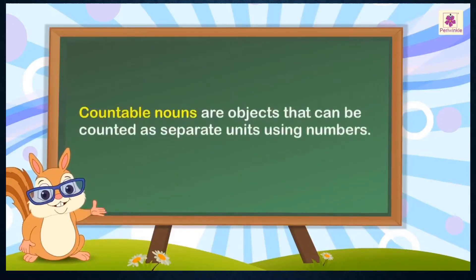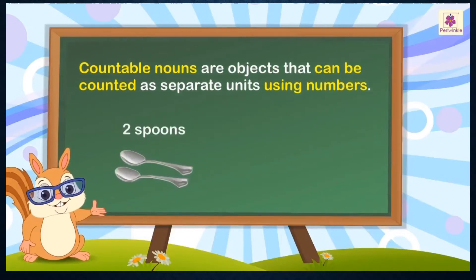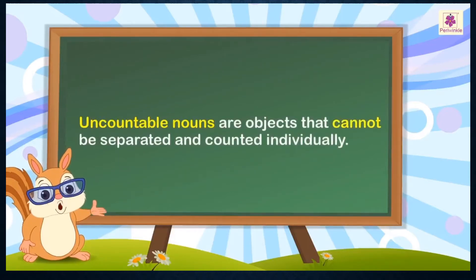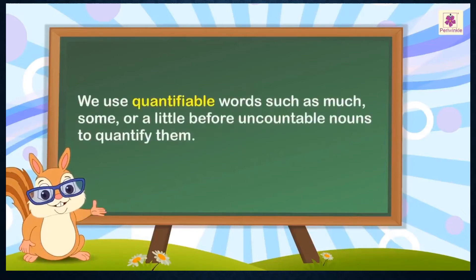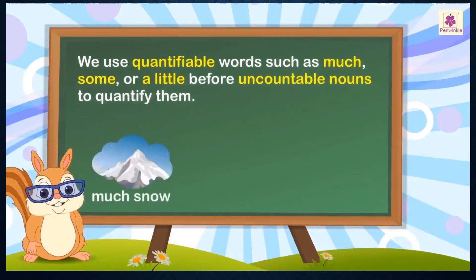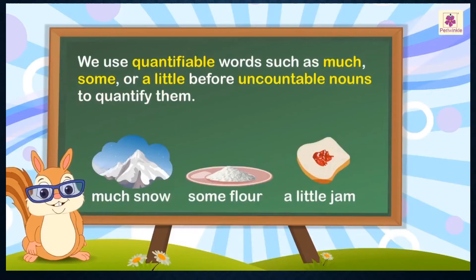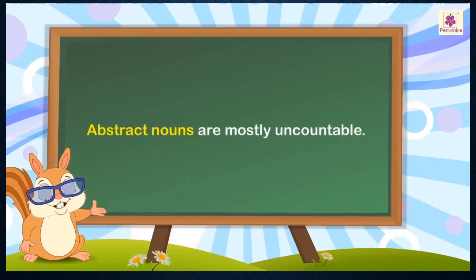Countable nouns are objects that can be counted as separate units using numbers. For example: two spoons, six students. Uncountable nouns are objects that cannot be separated and counted individually. We use quantifiable words such as much, some, or a little before uncountable nouns to quantify them. For example: much snow, some flour, a little jam. Abstract nouns are mostly uncountable.